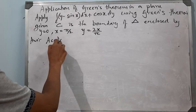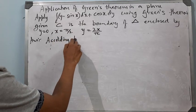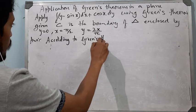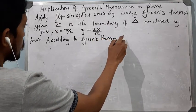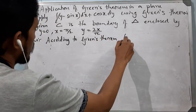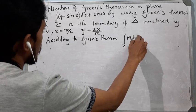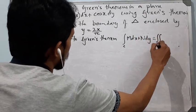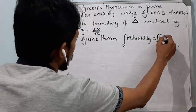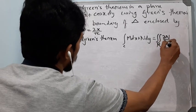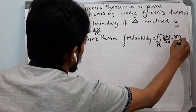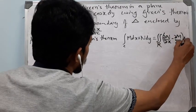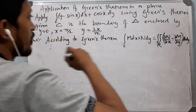Now, according to Green's theorem, the line integral ∮_C M dx + N dy equals the double integral over R of (∂N/∂x − ∂M/∂y) dx dy.